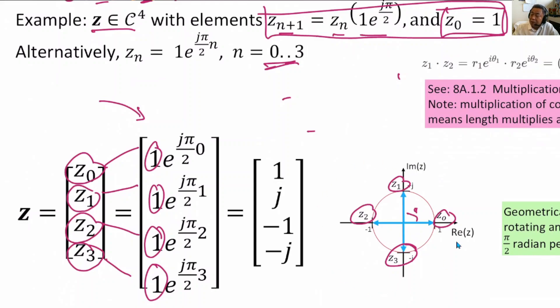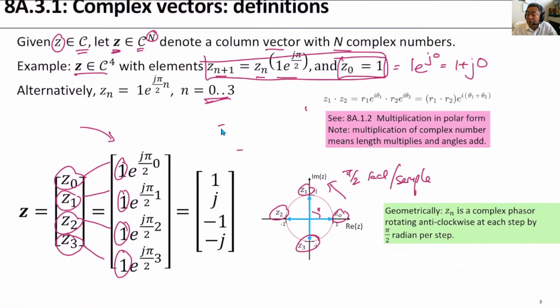There are four numbers on the unit circle. The key idea is that you are seeing a sequence from z0 rotating anticlockwise with the same radius. Each step, we are moving by π/2 radian, so we say π/2 radian per sample or per step. This is a very important vector that we are going to use for DFT. Please learn how to construct this vector and understand why each of these elements is the value it is representing.